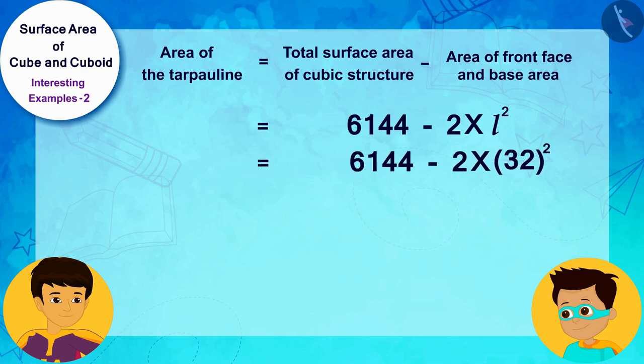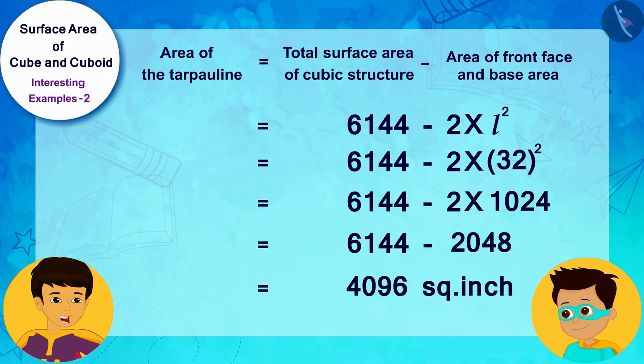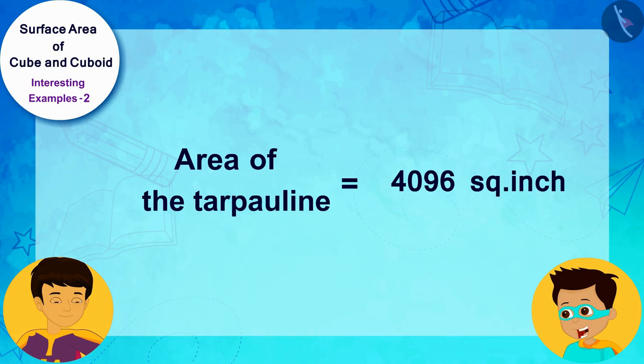Let me solve it quickly by writing it here. Look, we got 4,096 square inches of tarpaulin. Yes, did you see how easy it is? Let us quickly return to our world.